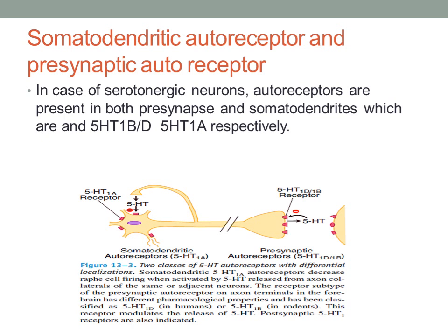Autoreceptors can be in and around the axon. The locations: one is the presynapse — here we can see the 5-HT1B/1D receptor, which is present in the presynapse. It can also be present in the somatodendritic dendrites — here the example is the 5-HT1A receptor. This occurs in serotonergic neurons where autoreceptors are present both in the presynapse and somatodendrites, with different receptor types: 5-HT1A in somatodendrites and 5-HT1B/1D in the presynapse. Here is a diagram explaining the same.